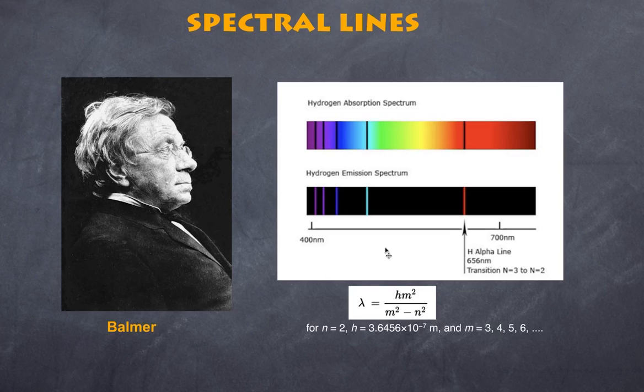h was some constant and n was 2 and m was various integer values. So, when he plugged in n equal 2 and then 3, 4, 5 and 6 into this formula, he discovered that he was able to identify the actual wavelengths of these lines in the visible part of the spectrum.